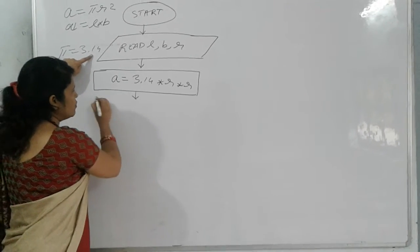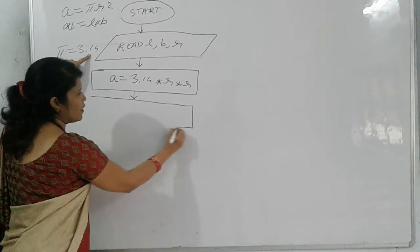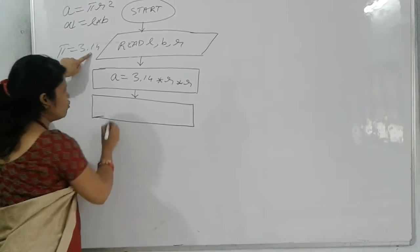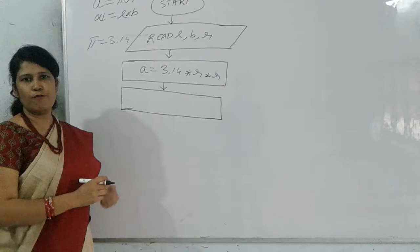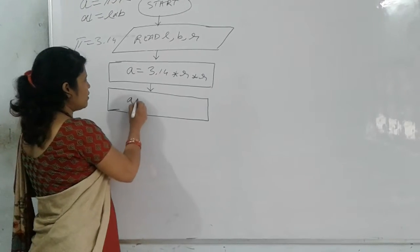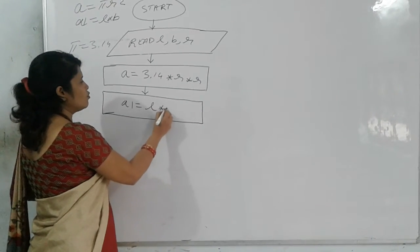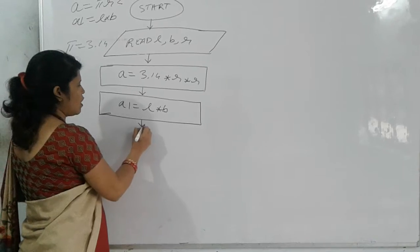Now after this we will calculate area of a rectangle. That will also come in processing box because it is also a formula. So we will write a1 is equal to length into breadth.